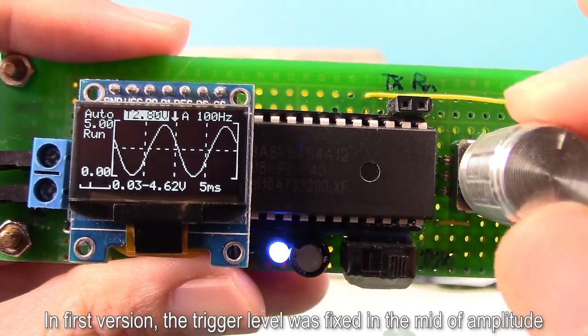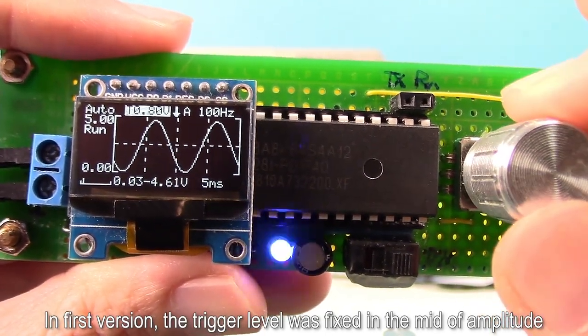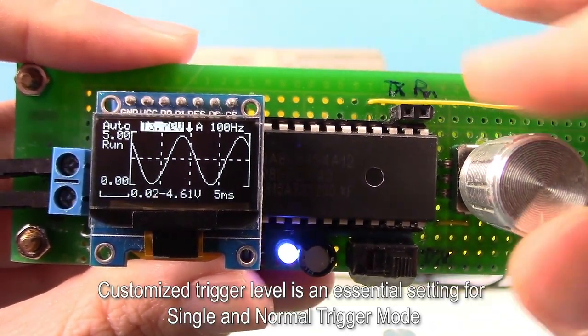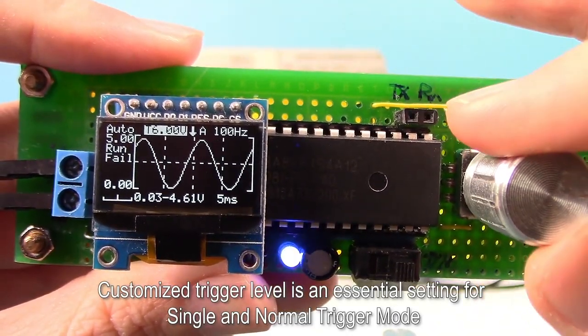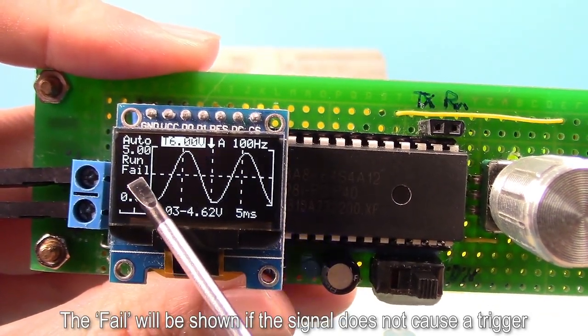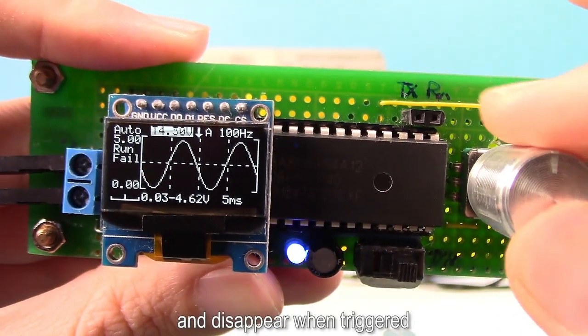In first version, the trigger level was fixed in the middle of amplitude. Customized trigger level is an essential setting for single and normal trigger mode. The fail will be shown if the signal does not cause a trigger, and disappear when triggered.